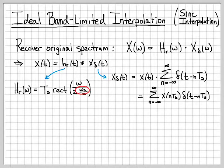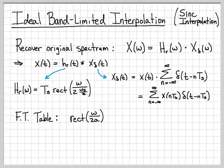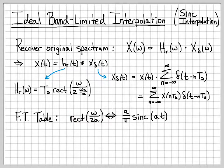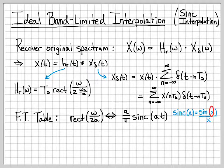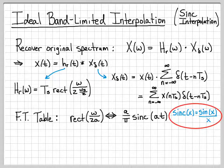We've written it in this form because in the Fourier transform table you'll find a pair that says: rect(ω / 2a) in frequency has a time domain signal of (a/π)·sinc(at). I've written it as 2 times a number because that matches the form 2a in the table, where a = ωs/2. One important note: the sinc function we're using is sinc(x) = sin(x)/x — some people include an extra π term, so make sure you use the appropriate definition.